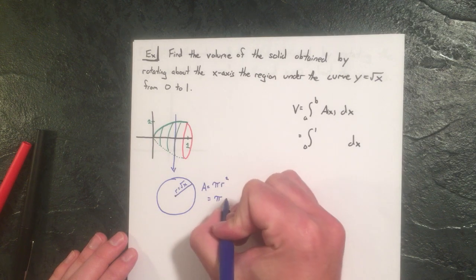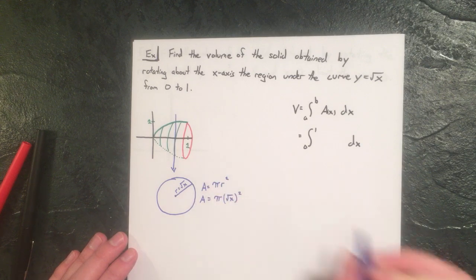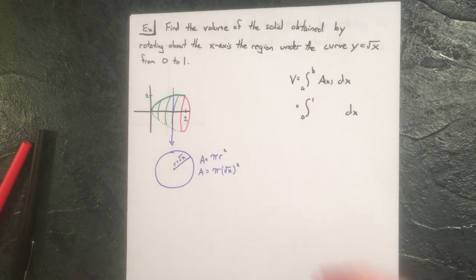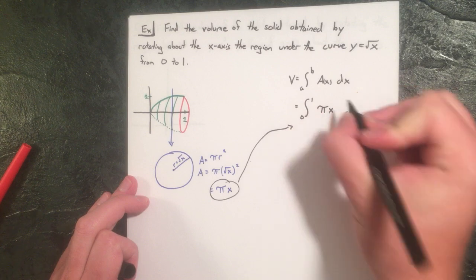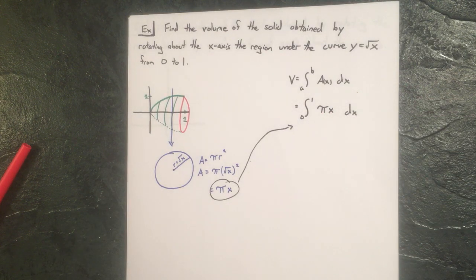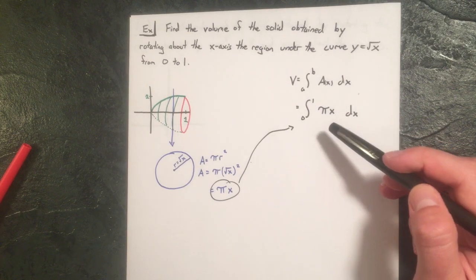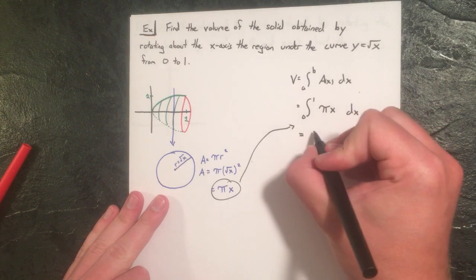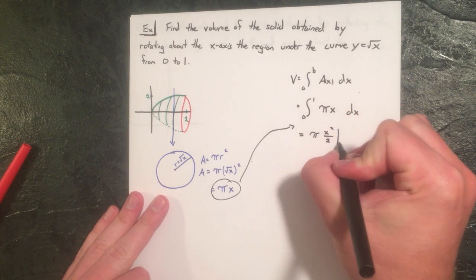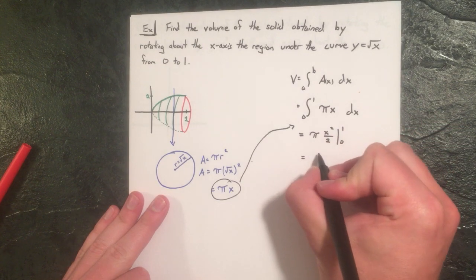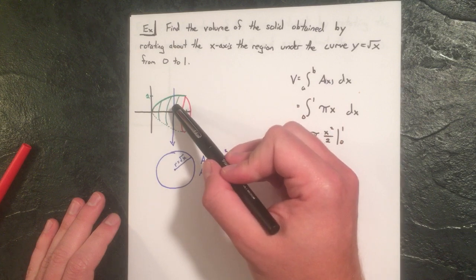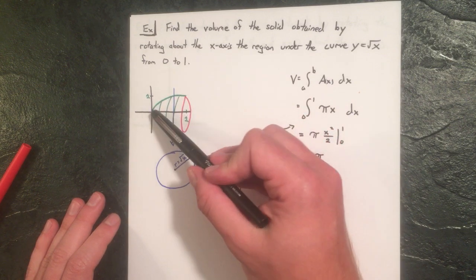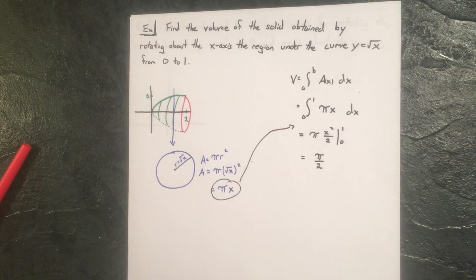So the area is πx. We plug that into the formula: V = ∫[0 to 1] πx dx. The π is a constant, and integrating gives us π/2. That is the exact volume of the region under y = √x rotated around the x-axis from 0 to 1.